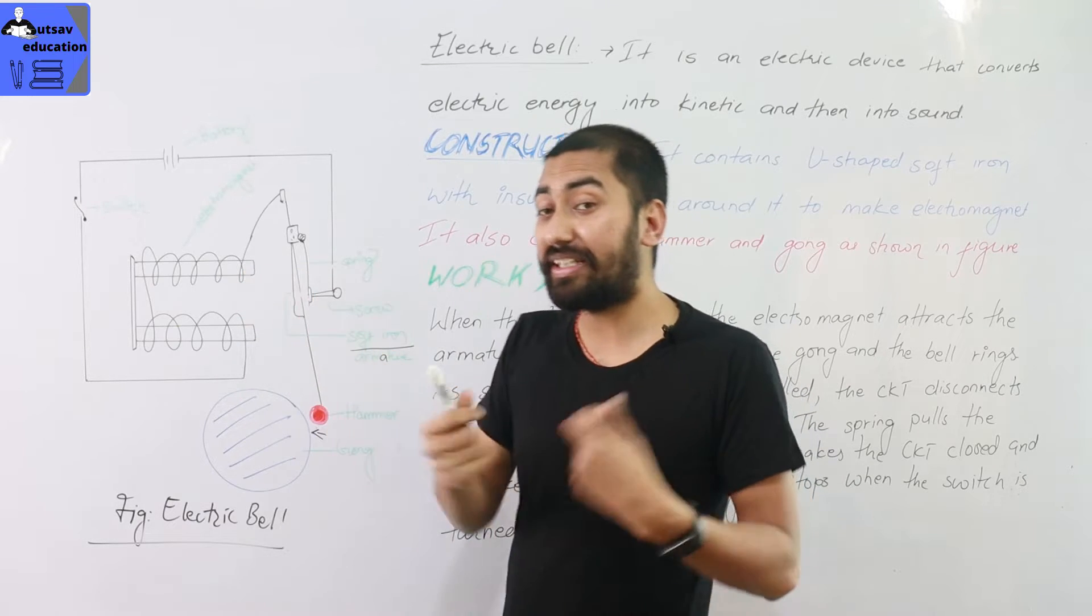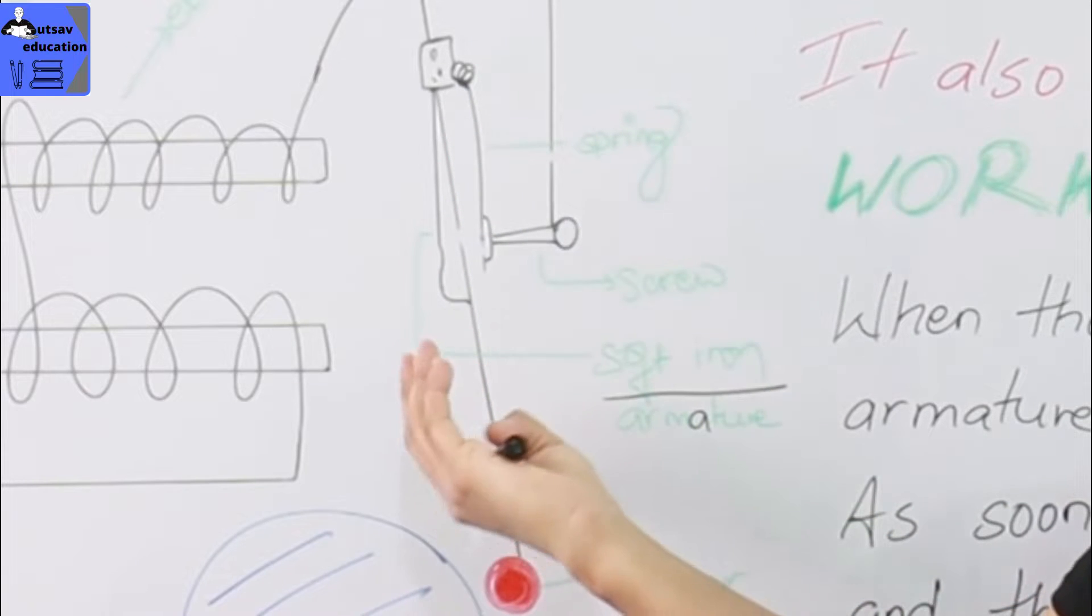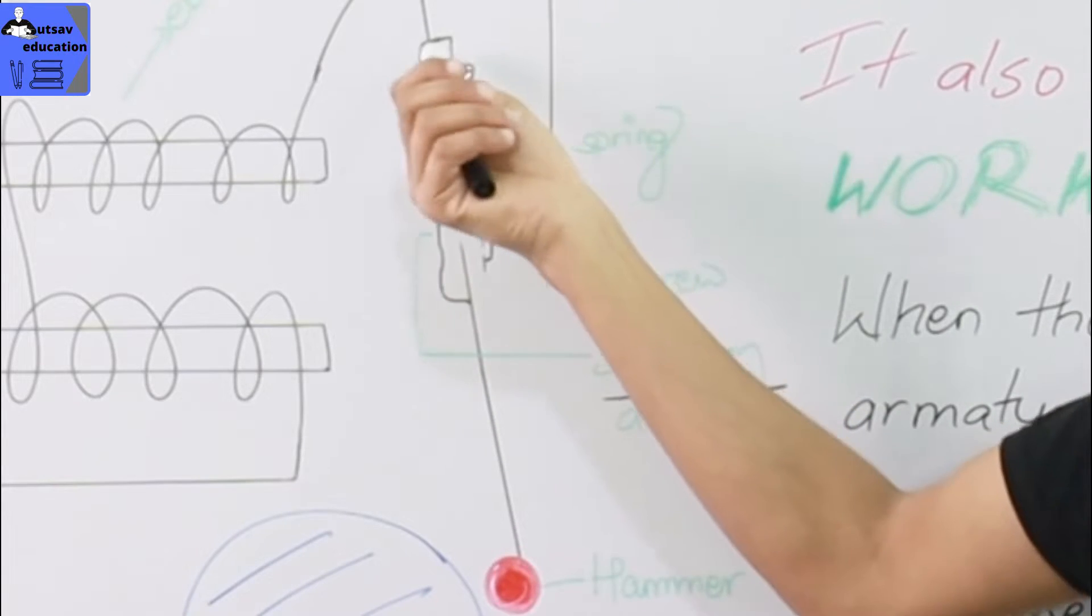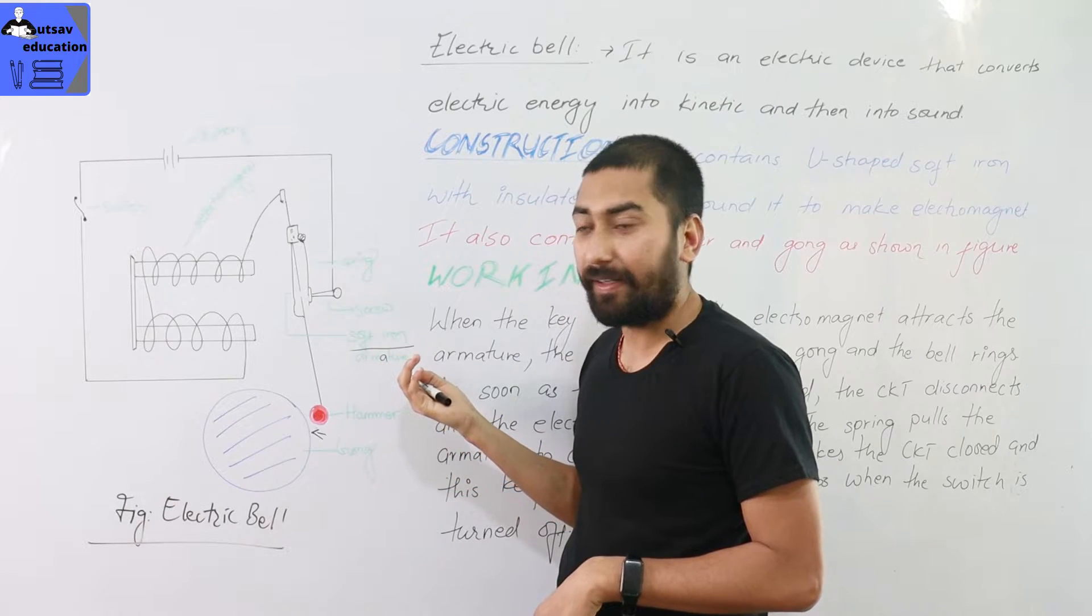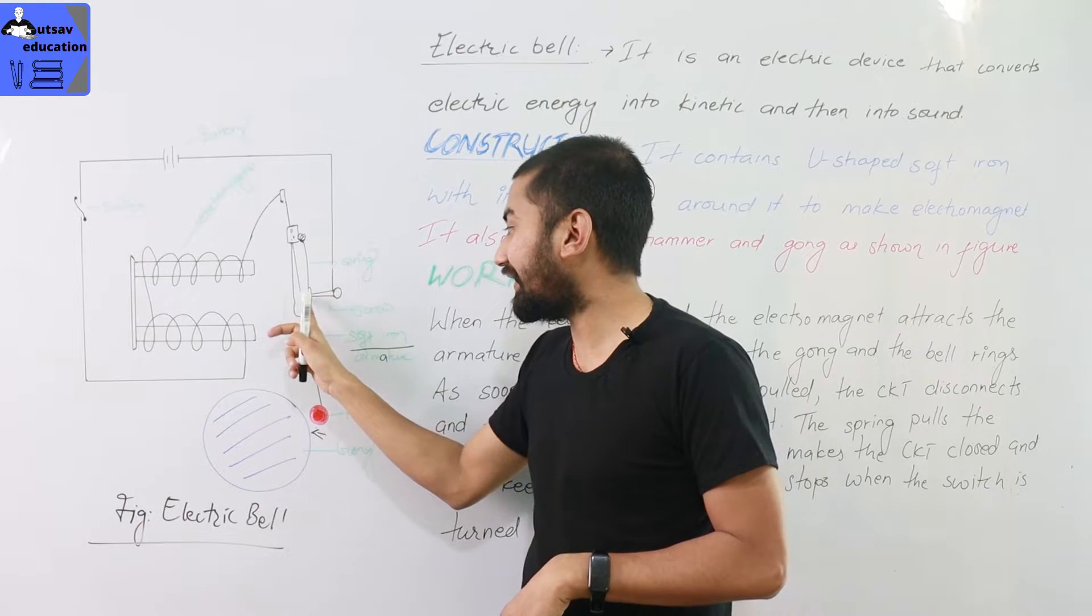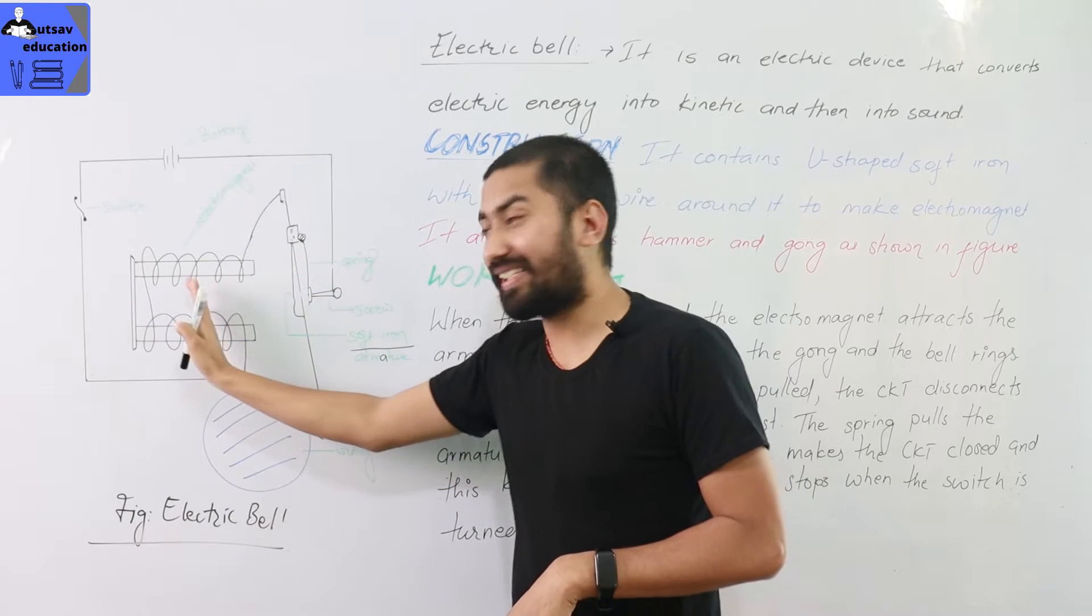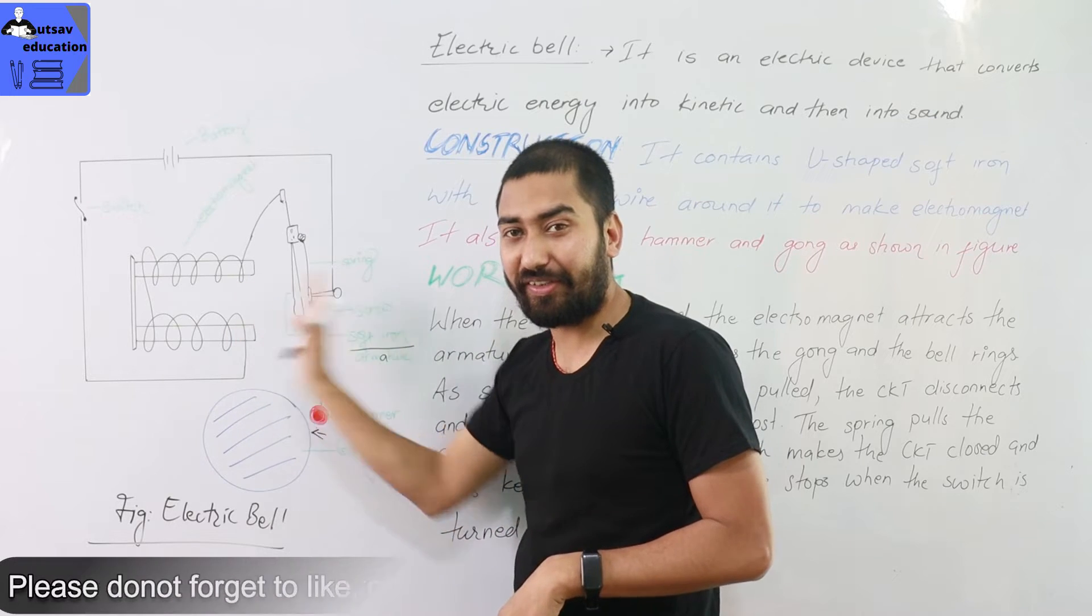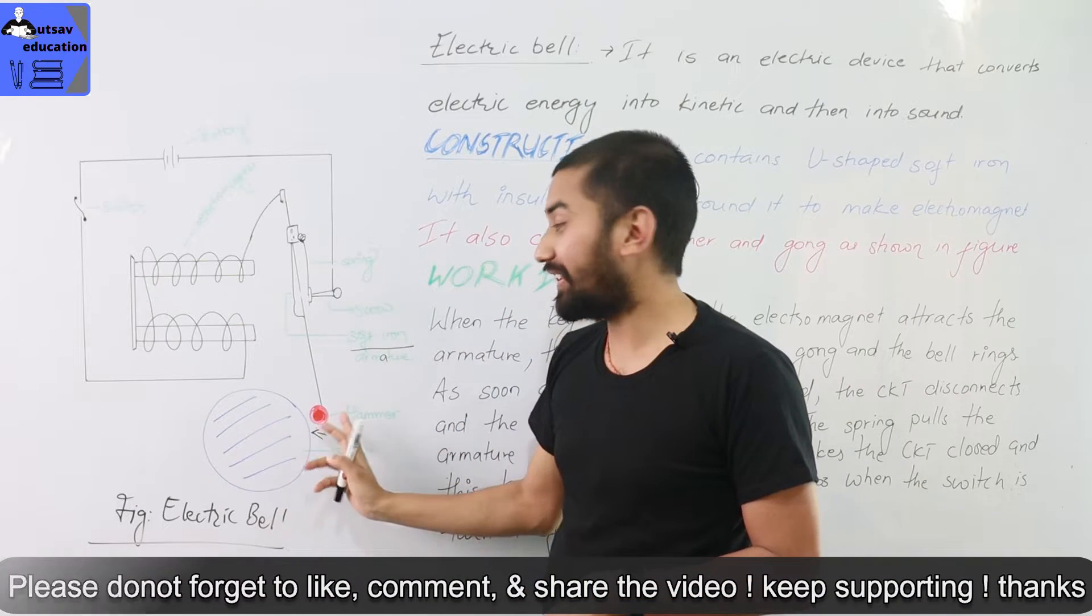So now the electromagnet deactivates and now the spring is connected with the soft iron armature, connected to the spring, and then back to the screw. The circuit completes and then the electromagnetism goes on and then it goes on and then it goes on.